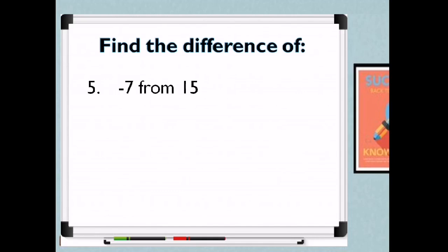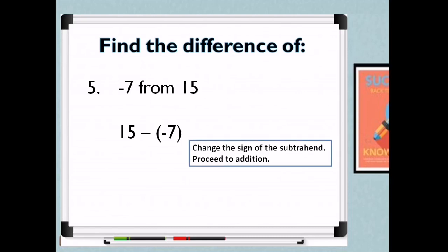Last example: negative 7 from 15 — that is 15 minus negative 7. Change the sign of the subtrahend, so it becomes 15 plus positive 7. We just add two positive numbers: 15 plus 7 equals 22. That's how we add and subtract integers — covering both positive, both negative, and one positive with one negative.